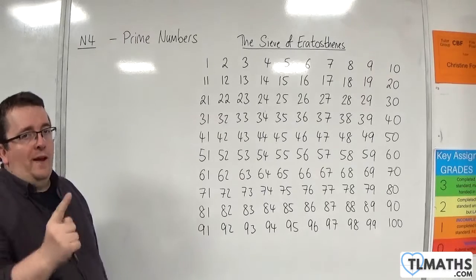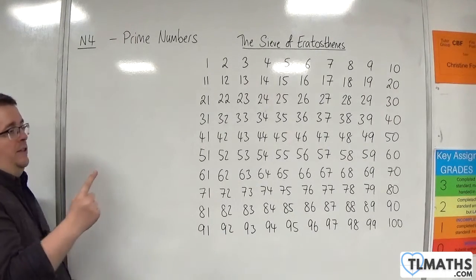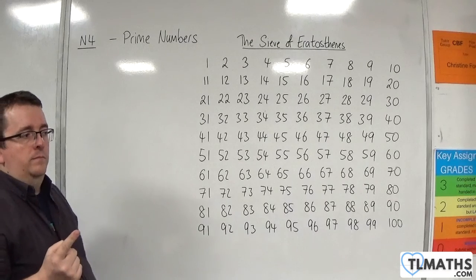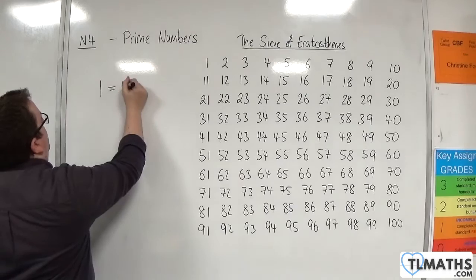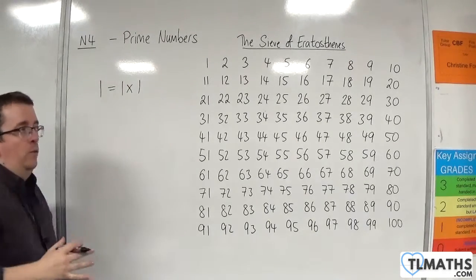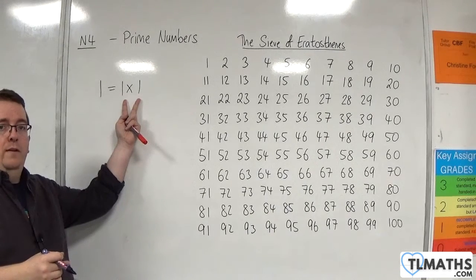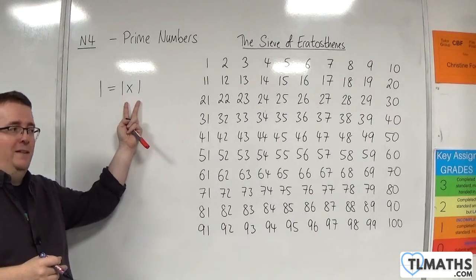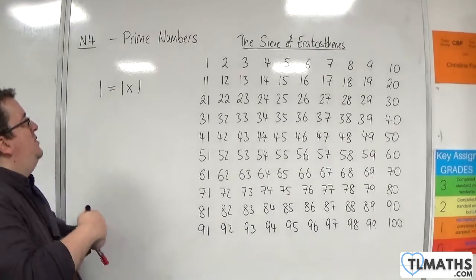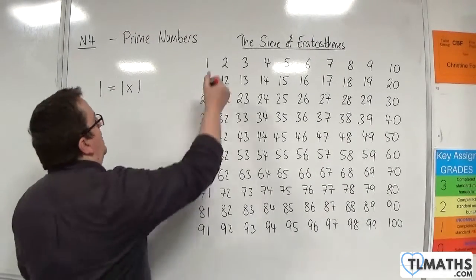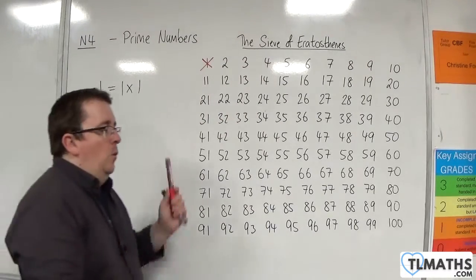So one only has one factor namely one. Just because I can write it as one is one times one when I lay it out the way that I've been doing we only count that one once. So one only has one factor, so one is not a prime number.